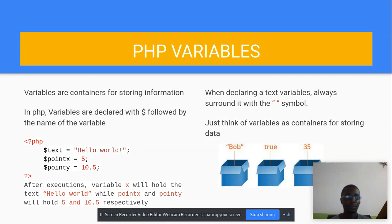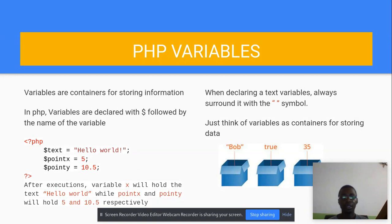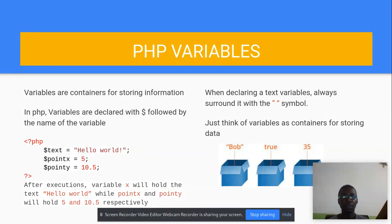That is how variables are defined in broad terms — variables are just containers. Think of variables as, for example, your fridge in the house where you store maybe your meat, your fruits, and so on. That is what variables are all about.